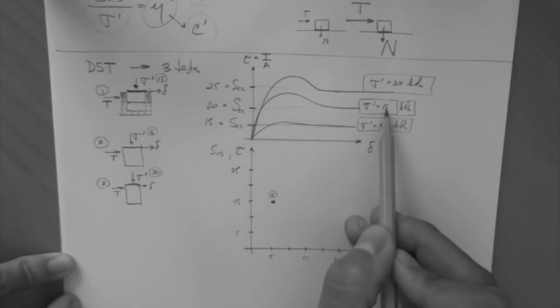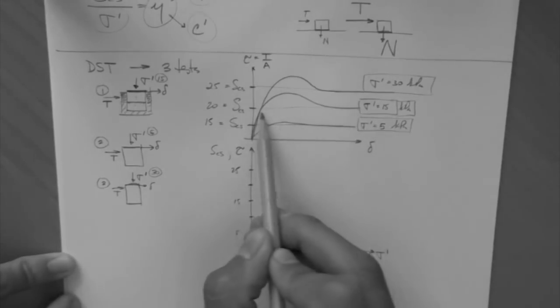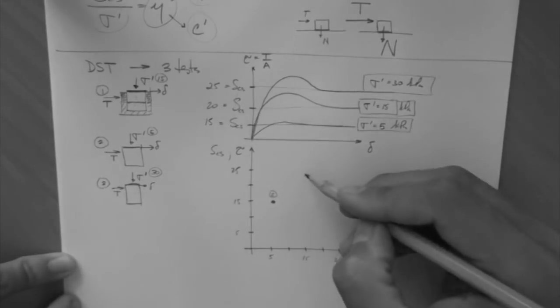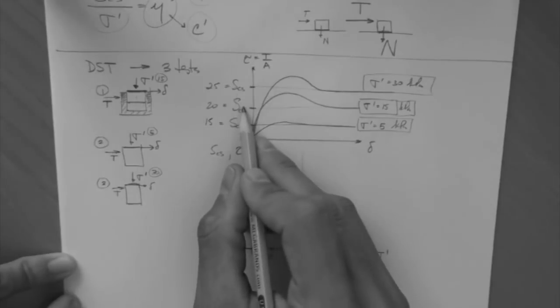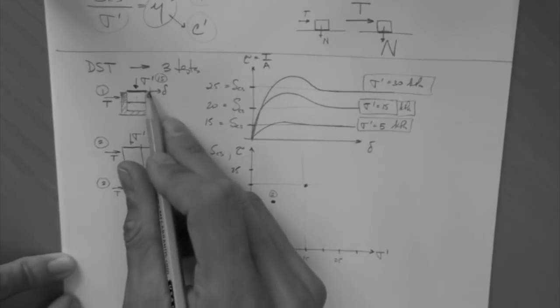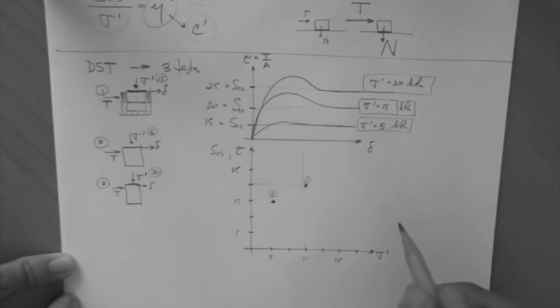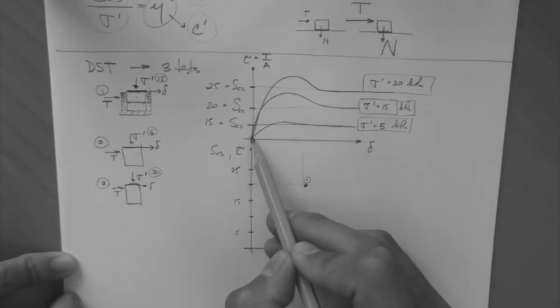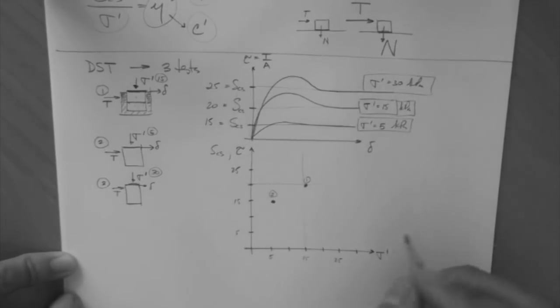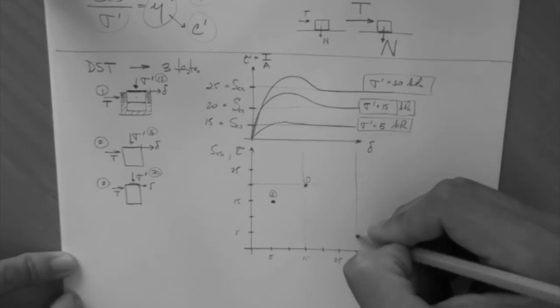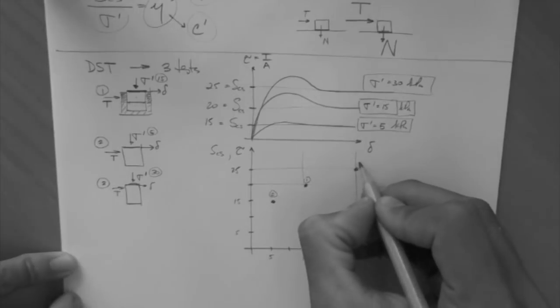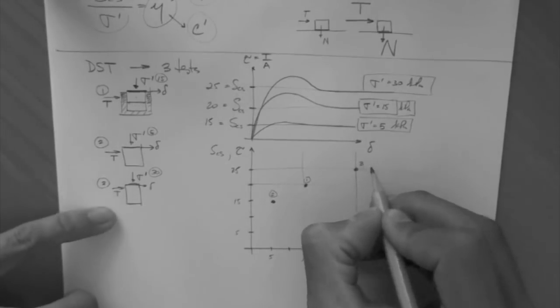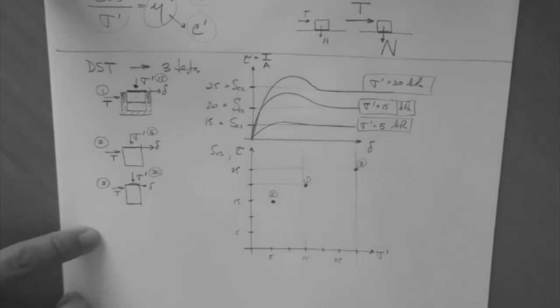Next one. Stress, effective 15. Strength, 20. So, 15, 20. That's test number 1. And then, the last one. Effective stress, 30. Strength, 25. That's 3. So we have three points in the Mohr circle space.